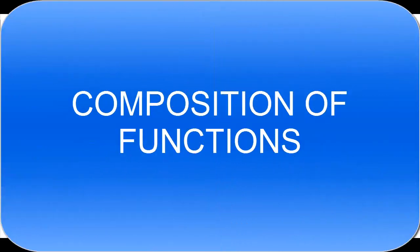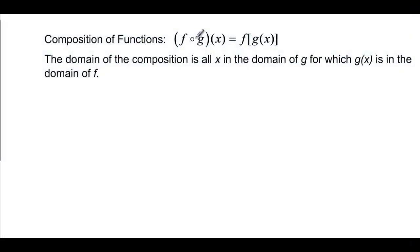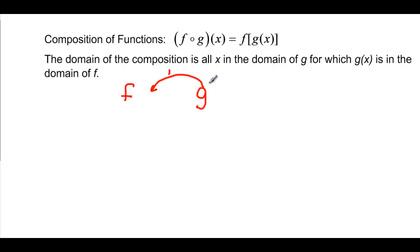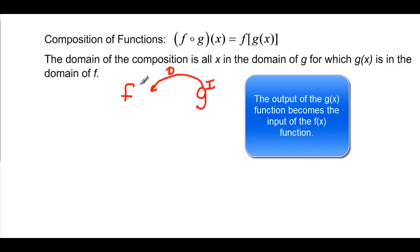This video is going to talk about composition of functions. The composition of functions can be written with a symbol that looks like a degree sign between f and g of x, or it can be written as f, and in place of its x, we put the function g of x. What that really means is that we're going to take the g function and plug it into f. So I take an input, get an output, and that goes into f — the output of g becomes the input of f.